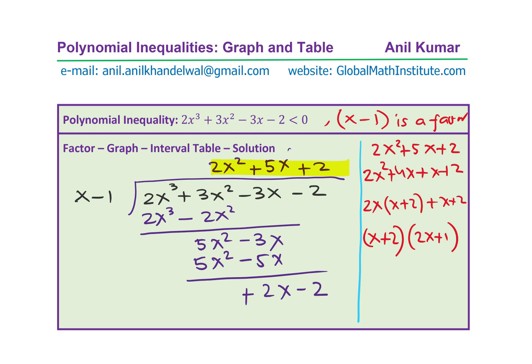Therefore, we have a factored form. And now we know that 2x³ + 3x² - 3x - 2 < 0 is same as the factored form, which is (x + 2)(2x + 1)(x - 1) < 0. Is that part clear to you?